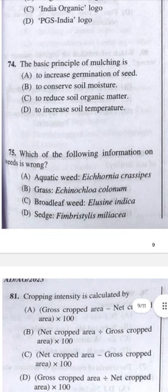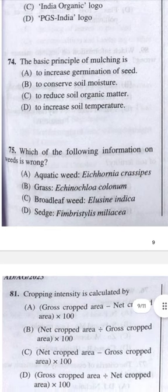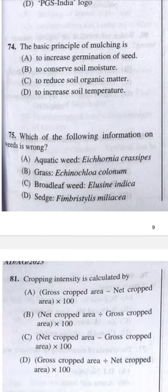Question 75: Which information on weeds is wrong? Answer C — broadleaf weed Eleusine indica. Eleusine indica is a monocot grass, not a broadleaf weed.